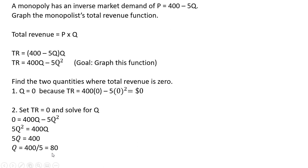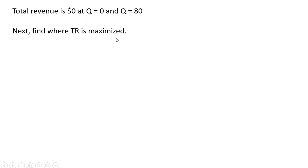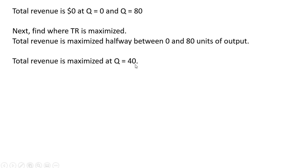So this is the other quantity where total revenue equals zero. Total revenue is zero at Q equals zero and Q equals 80. The next step is to find where total revenue is maximized. Total revenue is maximized halfway between our two values — zero and 80 — so total revenue is going to be maximized at Q equals 40.